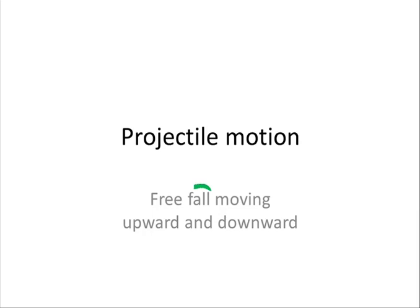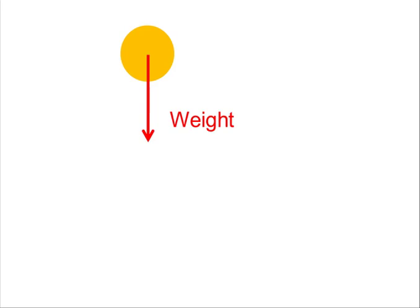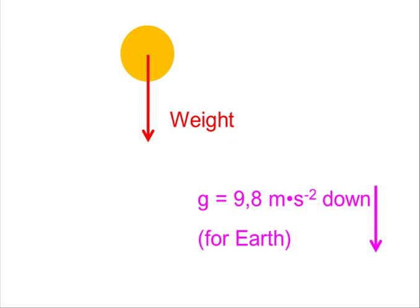In everyday language, when we say that something is falling, we mean that it's moving downward. But in scientific language, if we say something is in free fall, we simply mean that it's a projectile. In other words, the only significant vertical force on it is its weight, and so it is accelerating at an acceleration caused by that weight, which is always on Earth g — 9.8 meters per second squared downward.